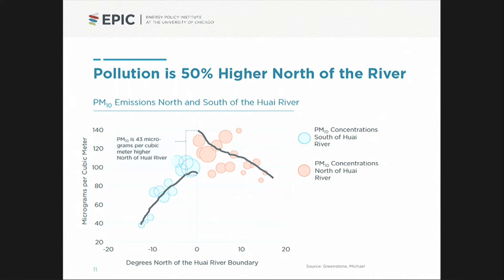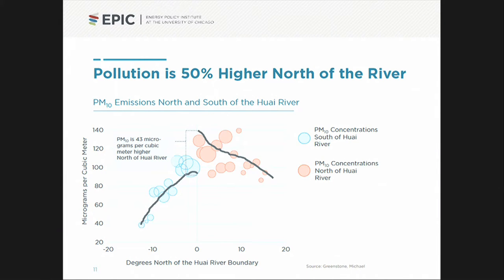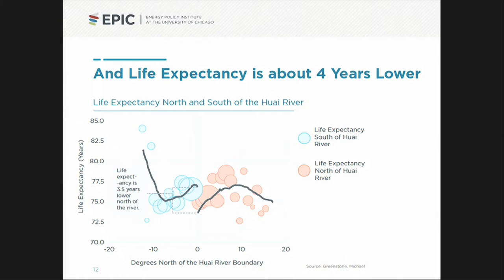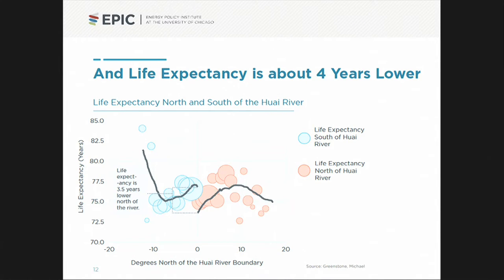Now comes the beauty of research design: I owe you a figure of life expectancy laid out exactly the same way, and we'll see if there's a jump in the opposite direction. And indeed — I like to joke that data is often like the worst boyfriend or girlfriend you ever had, always letting you down in a new and unexpected way. But here, data has not let me down. I had a hypothesis that air pollution was bad, and data supports it. If you live to the north and are an intended beneficiary of this winter heating policy, you live about three and a half years less.